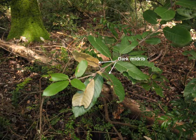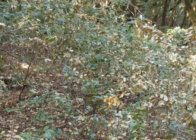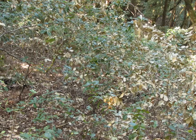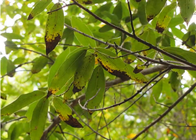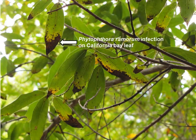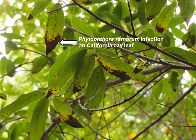In wet weather, multiple infection cycles can occur on Tanoak, causing extensive twig blighting. High numbers of infected twigs in the Tanoak canopy can produce enough spores to initiate trunk infections. This is very different from the situation in coast live oak, where spores produced on infected California bay leaves initiate trunk cankers on the oaks.